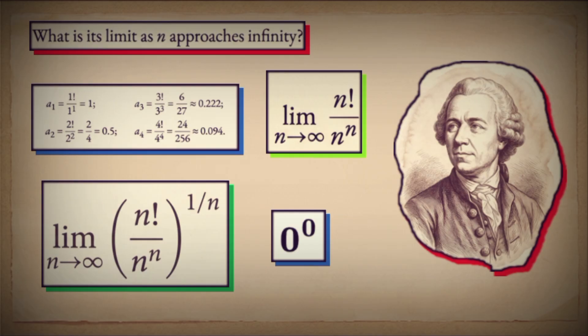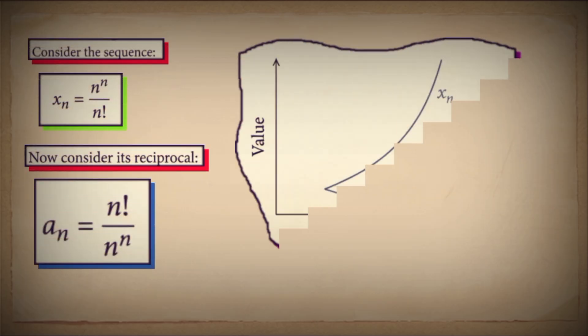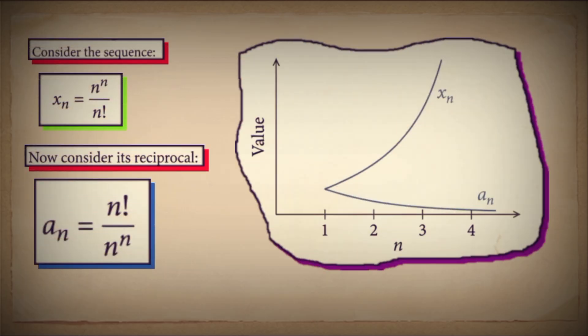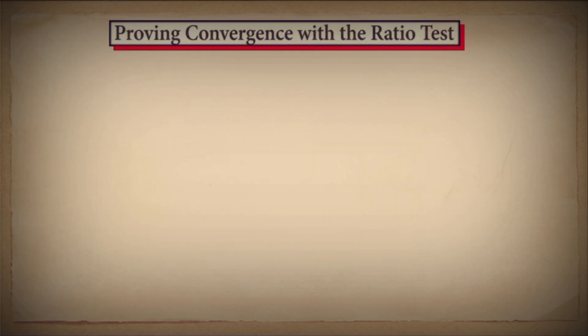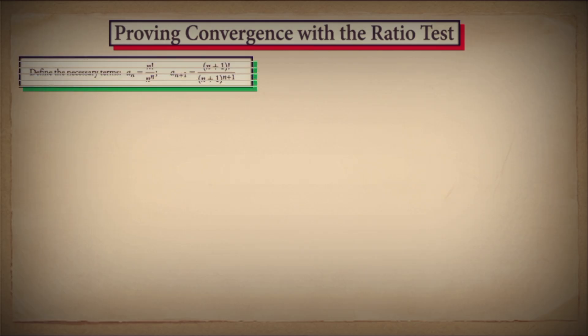Let's define our sequence: a sub n equals n factorial divided by n to the power of n. Plugging in small values, it clearly drops towards zero. But for a proof, we need more than a trend — we need inevitability. The weapon of choice? The ratio test. We investigate the ratio of consecutive terms.